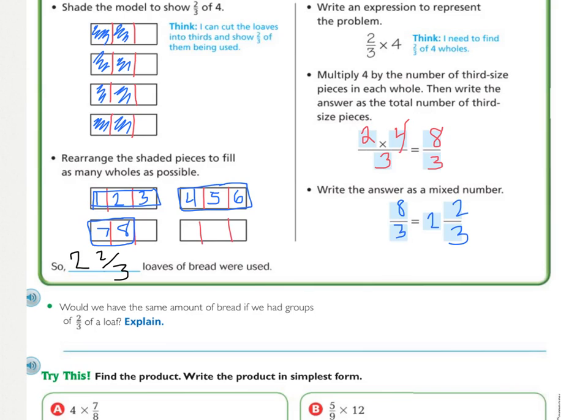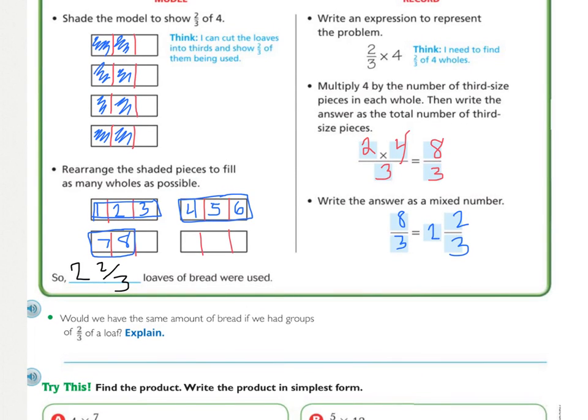This next question, they're just trying to get you to think. Would we have the same amount of bread if we had 4 groups of 2/3 of a loaf? And so this one would have been 4 times 2/3. So basically they're asking, is 2/3 times 4 the same as 4 times 2/3? And the answer, of course, is yes, because of the commutative property.